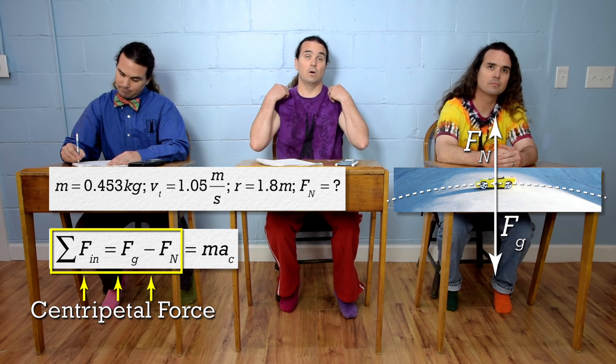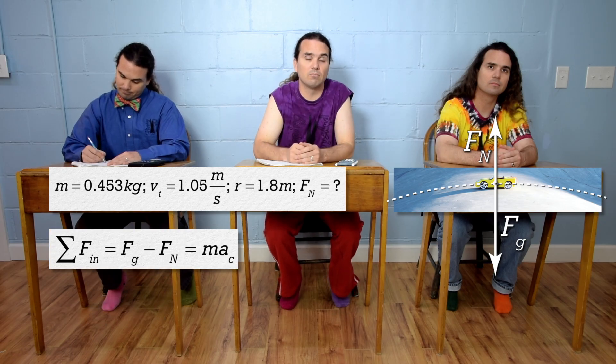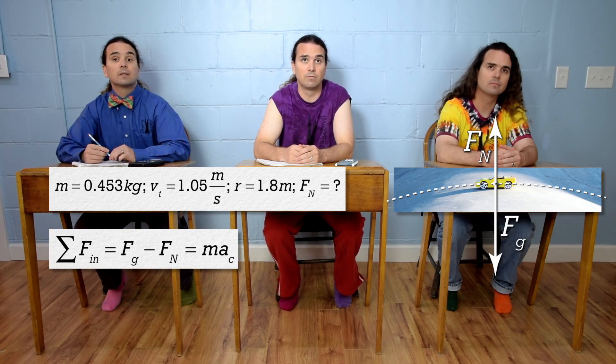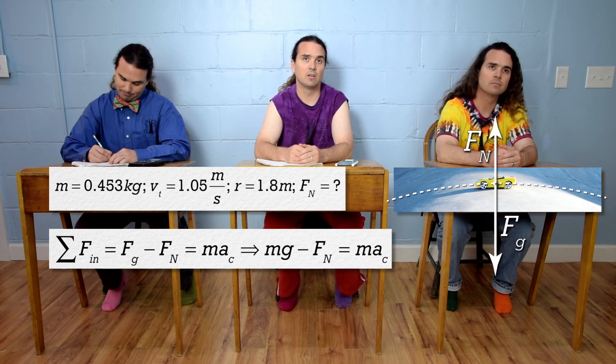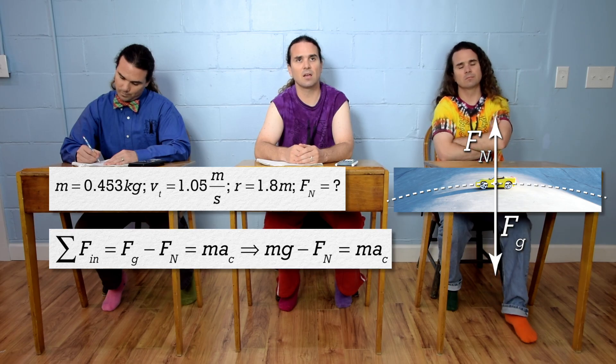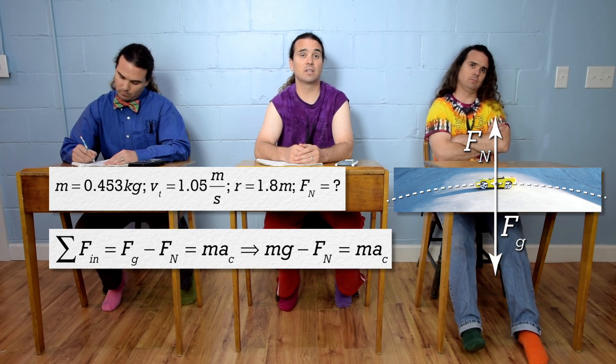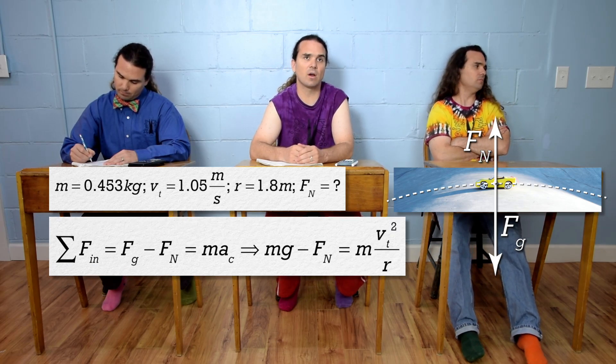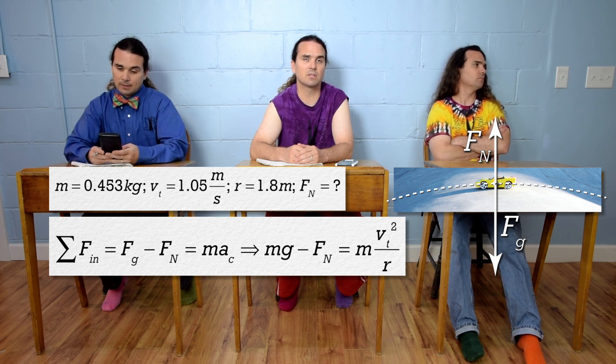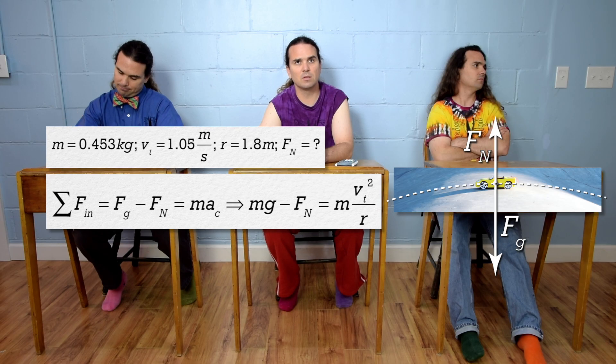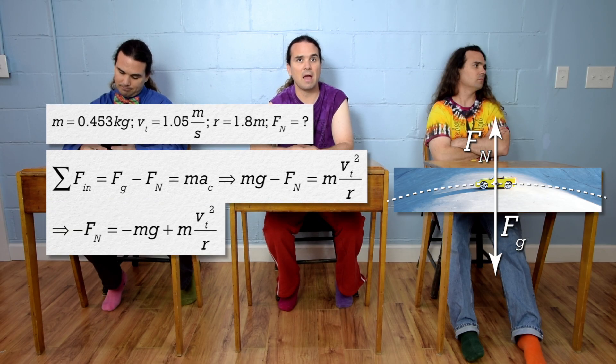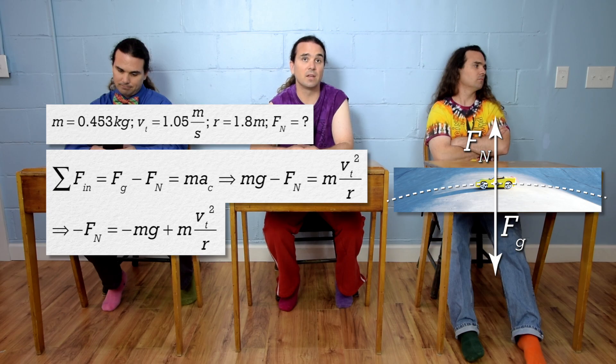Okay, force of gravity or mass times acceleration due to gravity minus force normal equals mass times... Well, we can substitute tangential velocity squared over radius for the centripetal acceleration. We are solving for the force normal, so subtract mass times acceleration due to gravity from both sides. And now multiply the whole equation by negative one to get force normal equals mass times acceleration due to gravity minus mass times tangential velocity squared over radius.